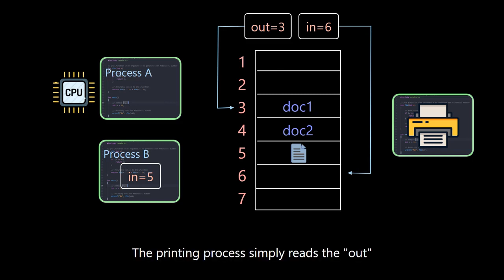The printing process simply reads the out value and prints according to the position. It will not be found that the documentation of process B has been omitted.